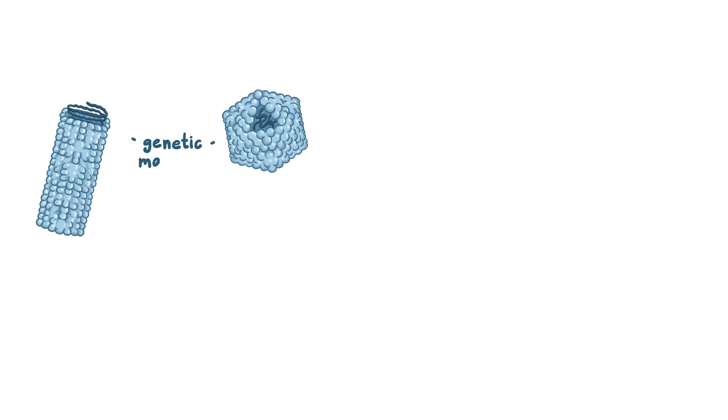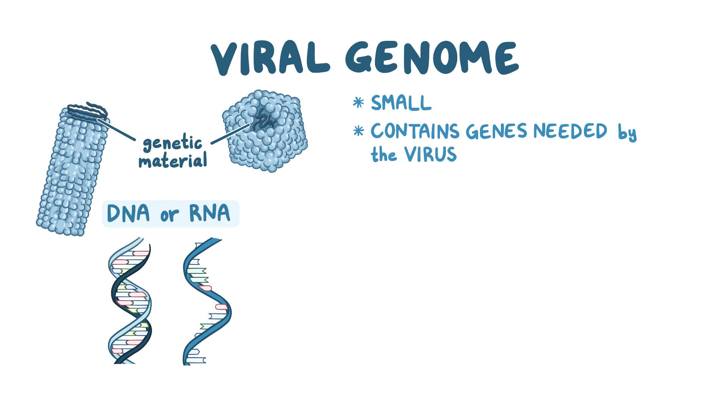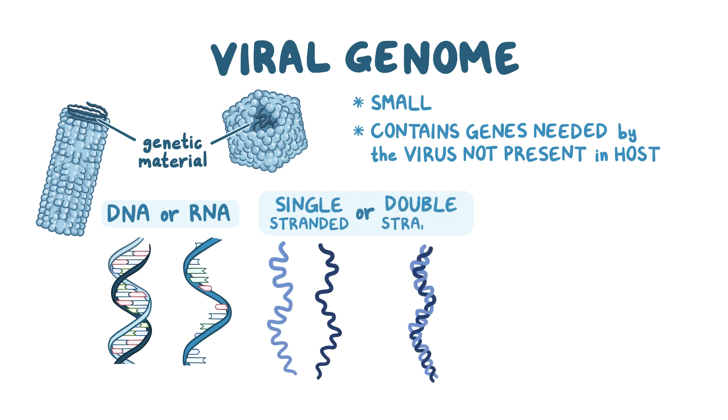The nucleic acid core of the virus contains the genetic material which can either be DNA or RNA, and the total genetic content of the virus is called the viral genome. The viral genomes are usually small and contain only a few genes that encode for proteins needed by the virus that's not present in the host cell. The genetic material can be single-stranded or double-stranded, linear or circular.